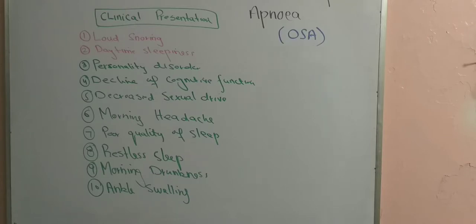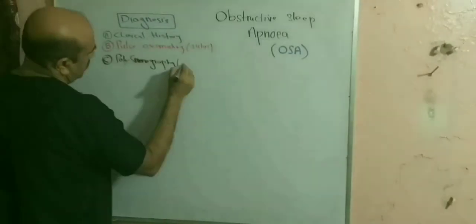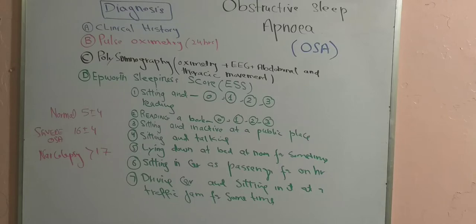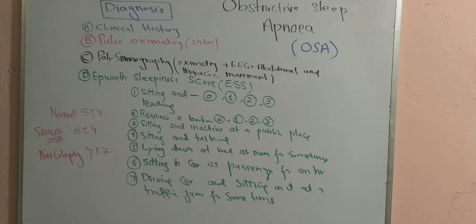Patients also have decreased sexual drive, morning headache, restless and poor-quality sleep, and feel drowsy or as if drunk in the morning, along with ankle swelling. These are the main clinical features with which these patients present. Once history is taken and risk factors assessed, diagnosis begins with clinical history from the family and especially the spouse, as the majority are obese male patients.